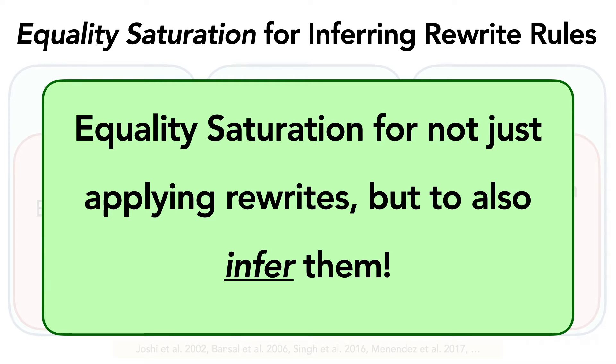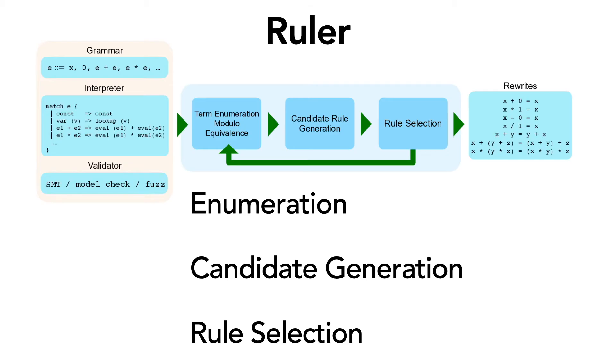So this was all about using equality saturation to apply rules, but it also turns out that equality saturation is effective for helping us learn the rules themselves. To show that, we have built a tool called Ruler. Ruler takes a grammar and an interpreter and uses equality saturation to learn a small, useful set of rewrite rules. Like prior work, Ruler also follows a three-step approach. So let's look at how it can make these three steps more effective by first looking at enumeration.